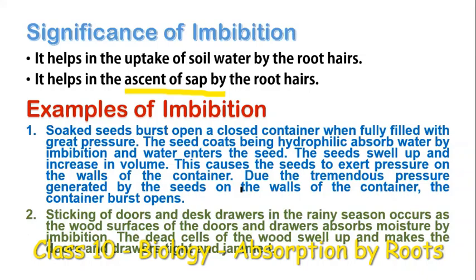As an example of imbibition: when we take dry seeds in a closed container, put water in it, close the lid, and leave it for some time, we find that the container bursts. This happens because the seed coats, being hydrophilic in nature, absorb water by imbibition. As water enters the seeds, they swell up, increase in volume, and exert pressure on the walls of the container, which cannot withstand the tremendous pressure and bursts open.